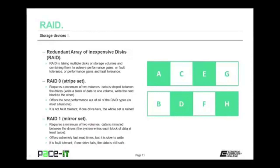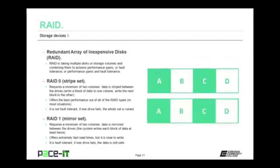To combat that, RAID 1 was developed — also known as a mirror set. It too requires a minimum of two volumes, but data is mirrored between the two drives. The system writes each block of data at least twice. RAID 1 offers extremely fast read times but is relatively slow in write time, as it needs to write twice. But it is fault tolerant — if one drive fails, the data is still safe.